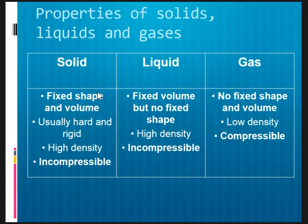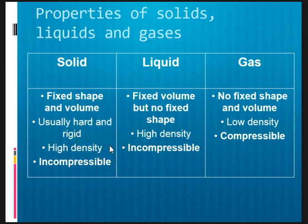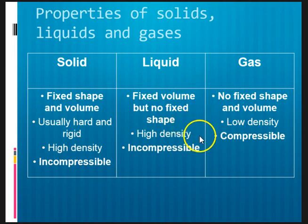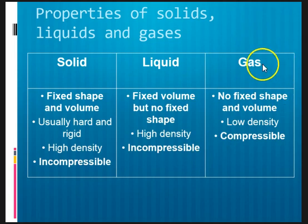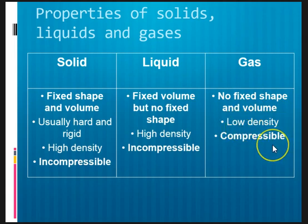From primary school science, you will have learned this, but let us just recap. For a solid, we know that it has fixed shape and volume. It is also usually hard and rigid. It has high density, and it is incompressible. For liquid, it has fixed volume but no fixed shape. It has high density as well, but usually not as high as that of a solid, and it is also not compressible. For a gas, a gas has no fixed shape and volume. It is also of very low density, and we can easily compress gases.